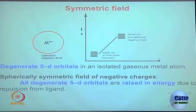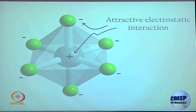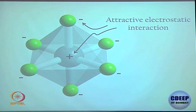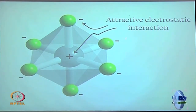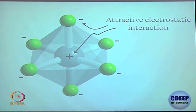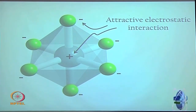This is the ideal situation where all ligands come from every direction equally. But in reality, ligands do not come from every direction — they approach from specific directions only: along the z axis, the y axis, and the x axis. Ligands approach the metal center from only these specific directions, not from in between.